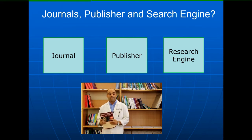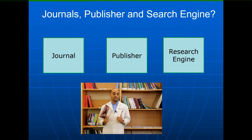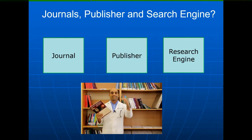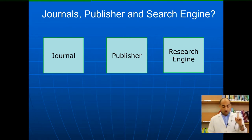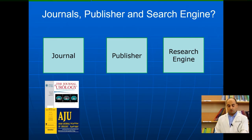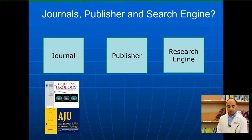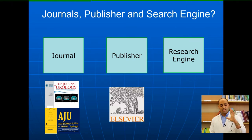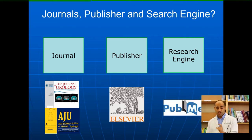Finally, there is something named a research engine. The research engine doesn't publish and has no direct contact with the author — they are like an index or statistics database. For example, the Arab Journal of Urology has to find a publisher, which is Elsevier, and the final layer is the research engine.